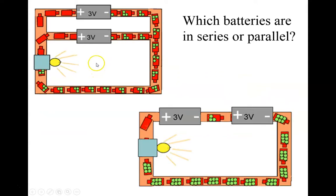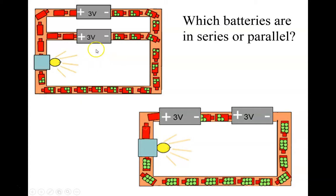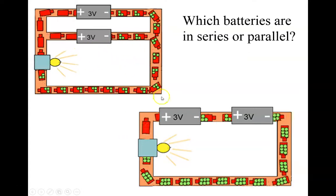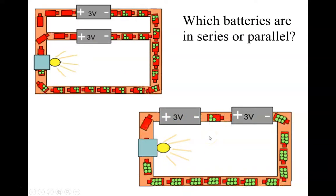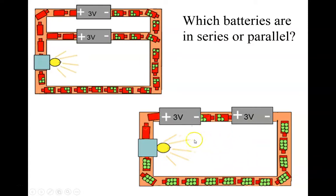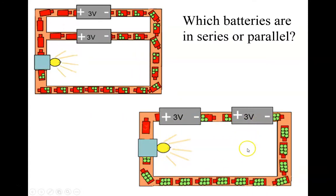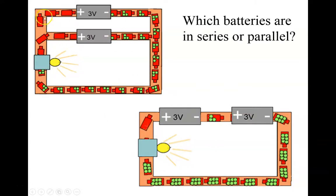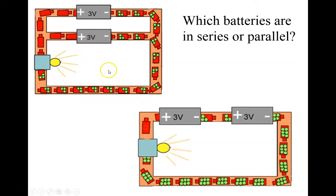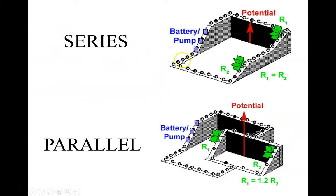Looking at this example here - would this represent a series or a parallel system of batteries? Well, this one is a single loop, so this would be our series. The cars go into one battery, then the other. Whereas here the cars can choose a branch - some go through the top battery and some through the lower battery, then they join back up and go back through the light. So that's in parallel.